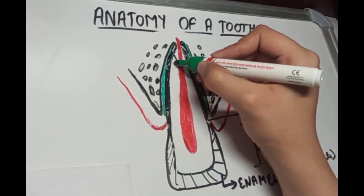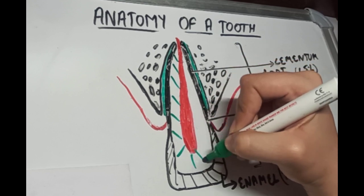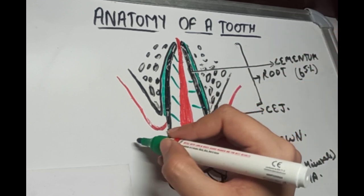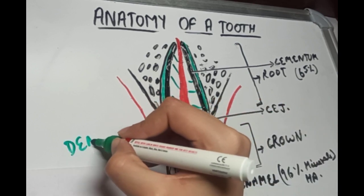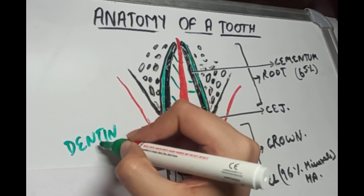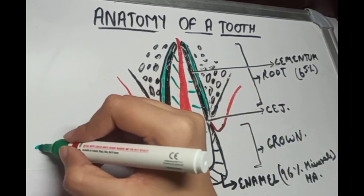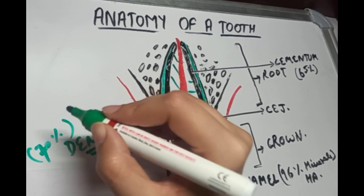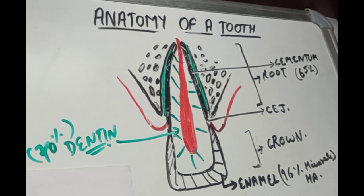Now the major portion or the bulk of the tooth is covered by a hard tissue called dentine. This forms the major portion of the tooth and contains about 70% minerals by weight. So it is harder than bone but not as hard as enamel.